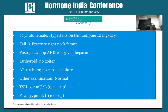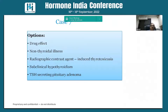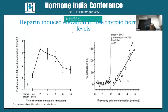Case seven: a patient with right femur fracture, atrial fibrillation, given heparin. TSH is 3.2 and free T4 is on the higher side. The differential diagnosis includes drug effect, non-thyroidal illness, radiographic contrast agent causing acute thyroid toxicosis, subclinical hypothyroidism, or TSH-secreting adenoma. Importantly, heparin can elevate free T4 levels by displacing it from binding proteins — so drug effect must be considered when interpreting thyroid results in anticoagulated patients.